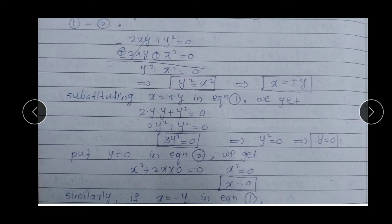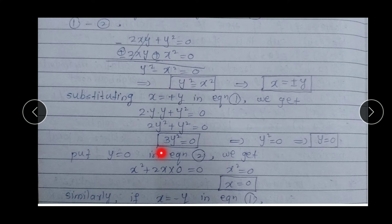Now we substitute. First, putting x = +y into equation one: 2·y·y + y² = 0, which gives 2y² + y² = 0, so 3y² = 0. This means y² = 0, so y = 0.